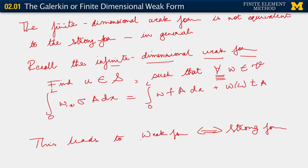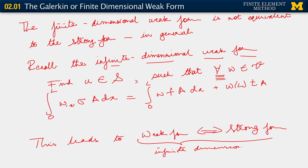This leads to the weak form being equivalent to the strong form — all infinite dimensional. And both of these are infinite dimensional.